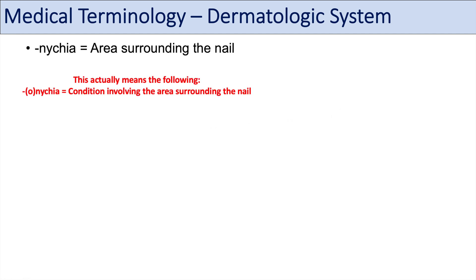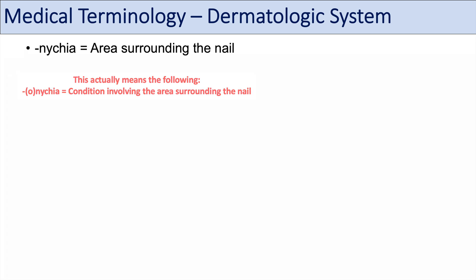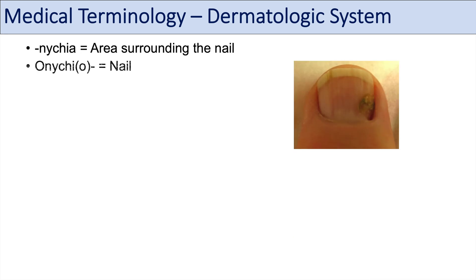Other parts of the dermatologic system include the nail. The suffix nikia refers to the area surrounding the nail. We can also see the prefix oniko or onikio referring to the nail as well. You can think of words like onychomycosis — a fungal infection of the nail.